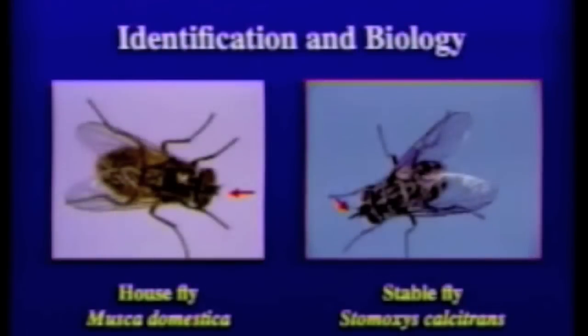Stable flies have the ability to travel great distances, so if you're finding them on the farm, it could be that they're coming from another source. But what you want to do is locate the potential problems on your own farm. Let's put these two flies head-to-head for comparison — you can see the differences on their heads where the stable fly has that projection, which is the piercing and chewing mouthpart, the biting part of that fly. Stable flies are just a little bit smaller than house flies, but they can be easily recognized putting them side-by-side like this.